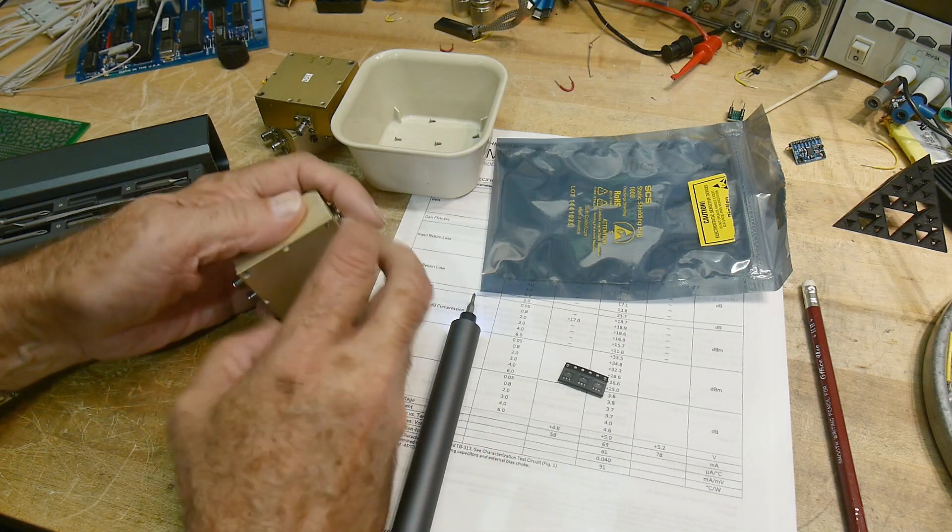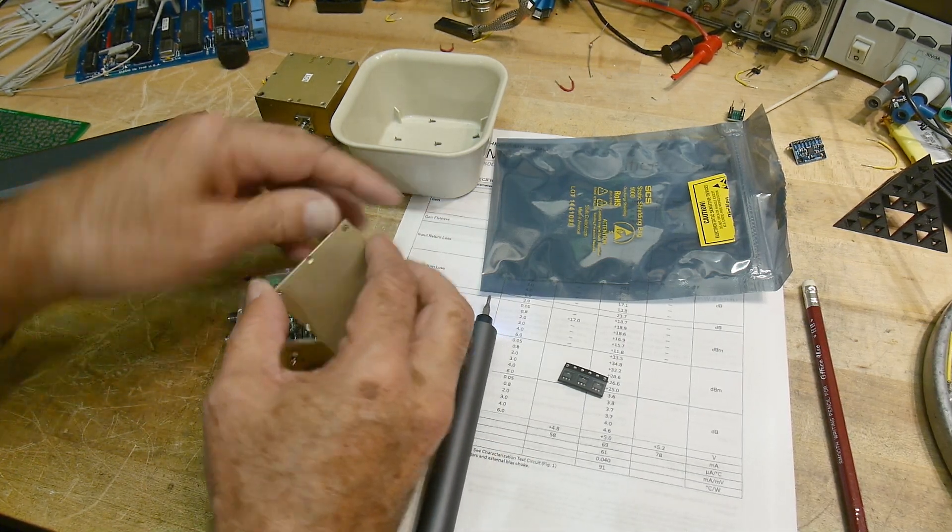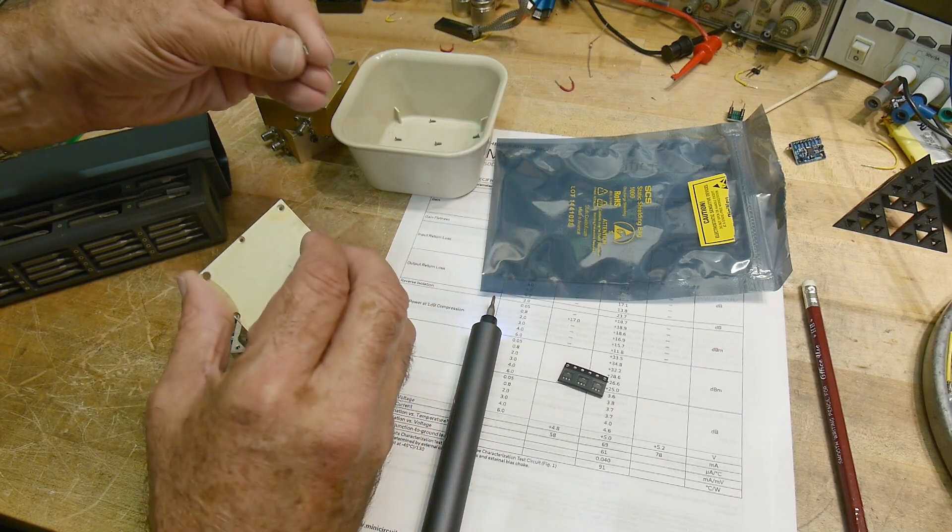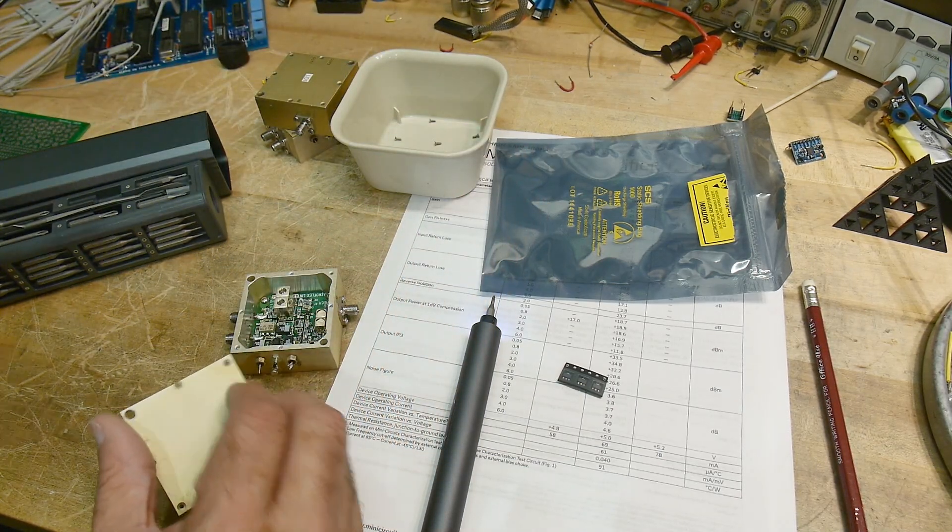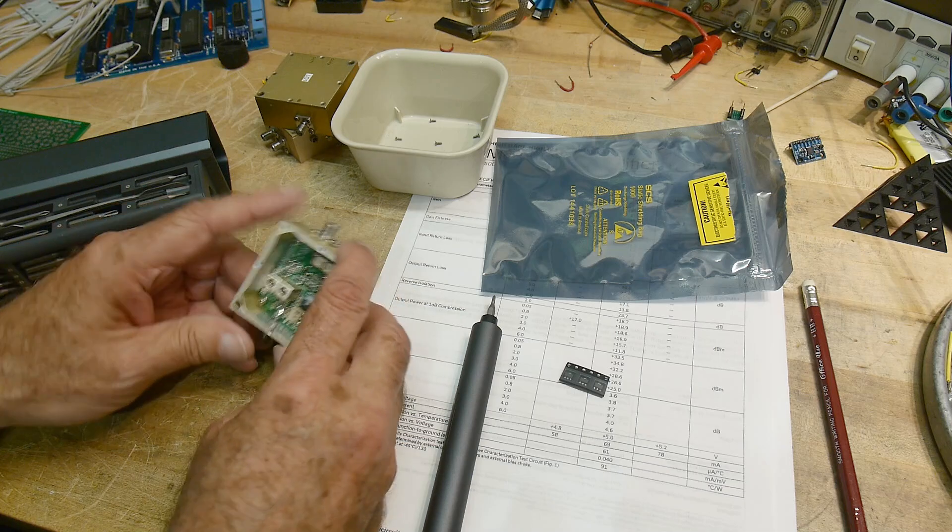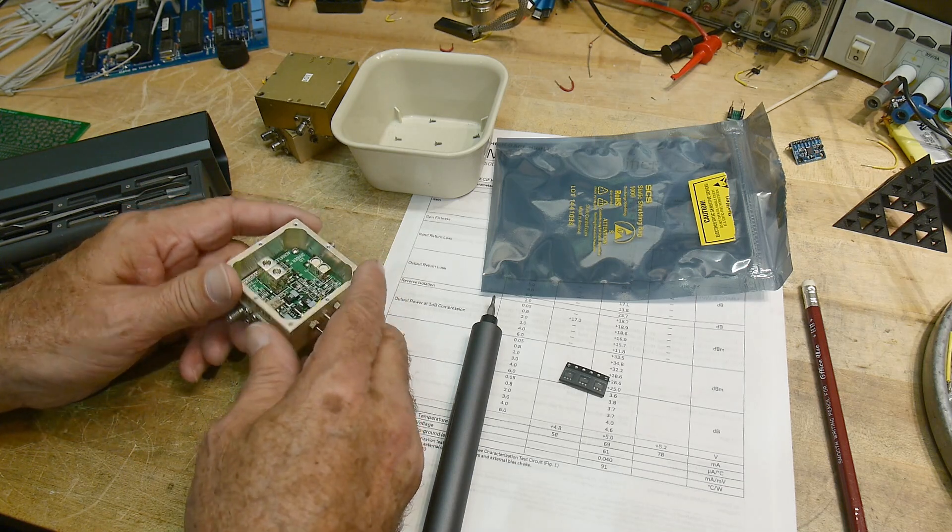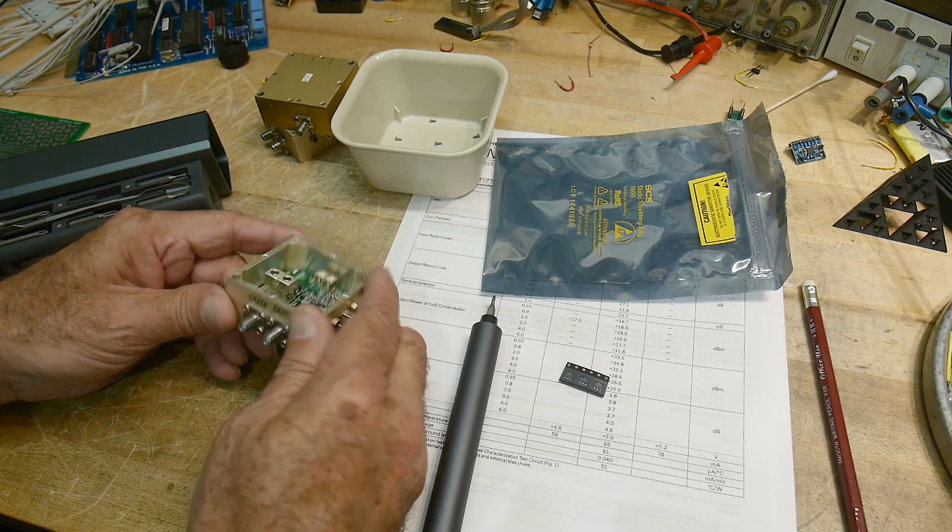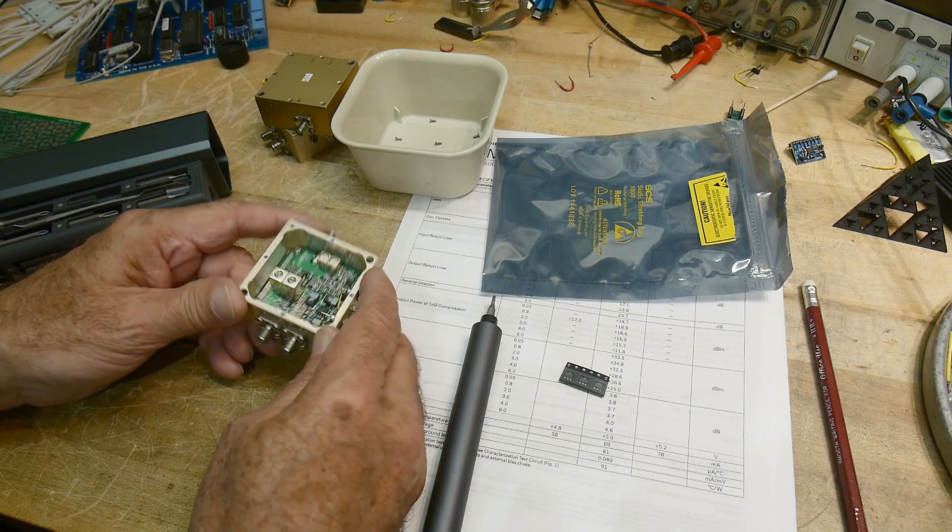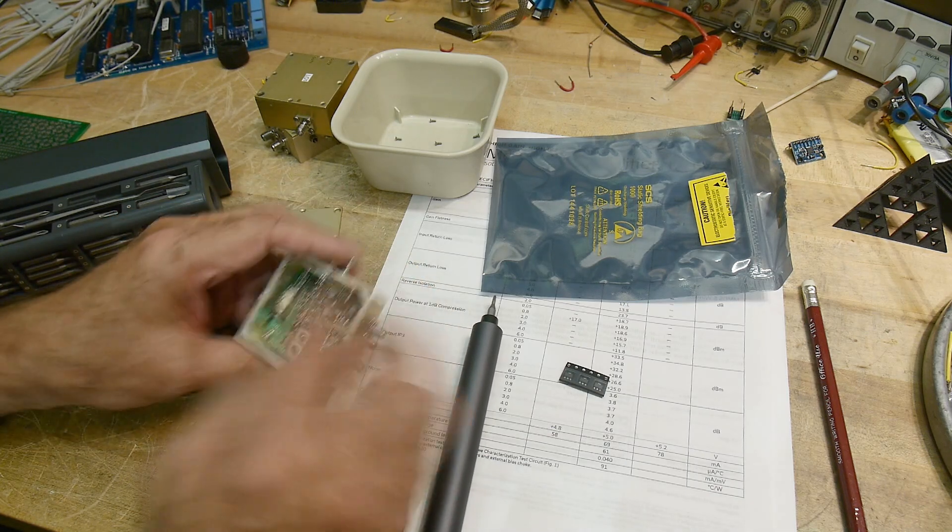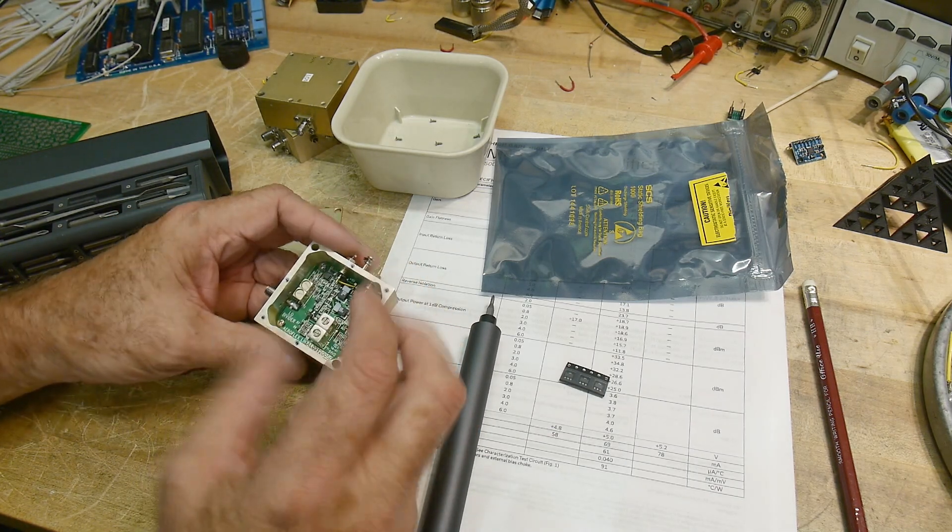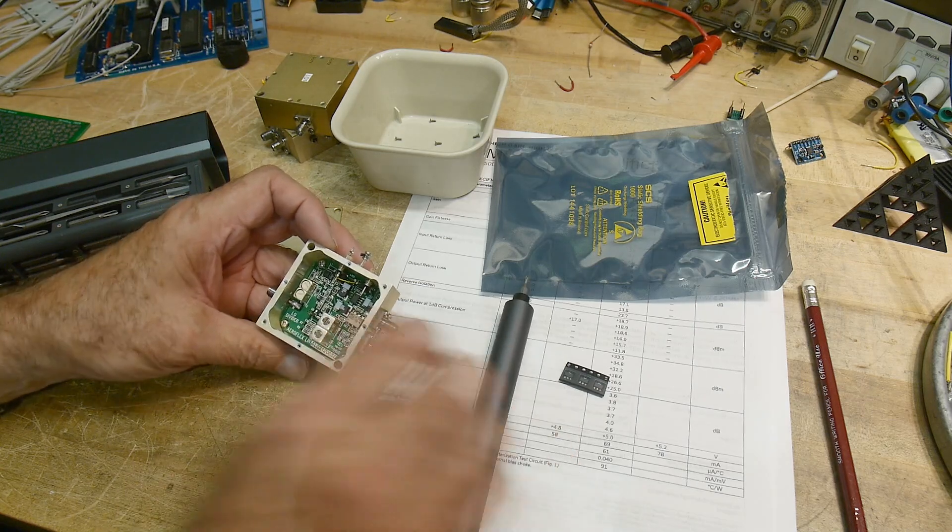It's like the screw is stripped in this thing. Oh there it goes. Yeah, I think that one's stripped. Anyhow, this is the size of the PC board we need, so let's remove this old PC board. We're not going to need it.